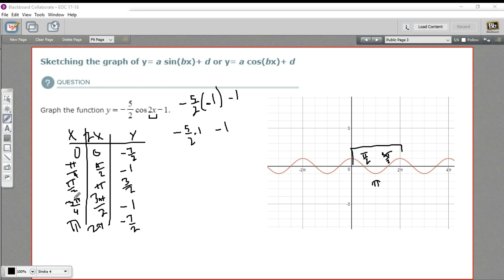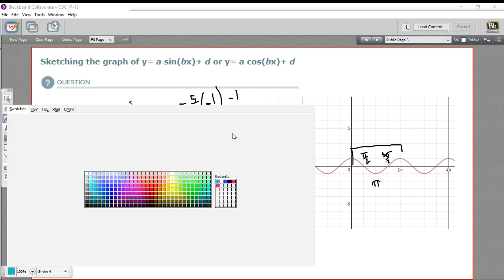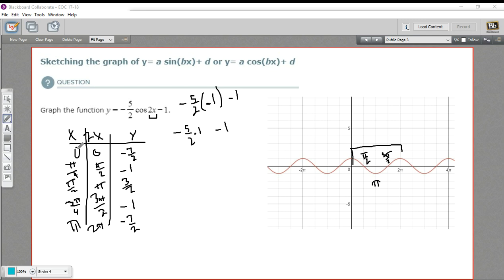All right, we've got our x and our y values. Let's go ahead and plot them. So let me choose a different color here. So my first point is 0 and negative 7 halves. So 7 halves is 3 and a half. So right here.